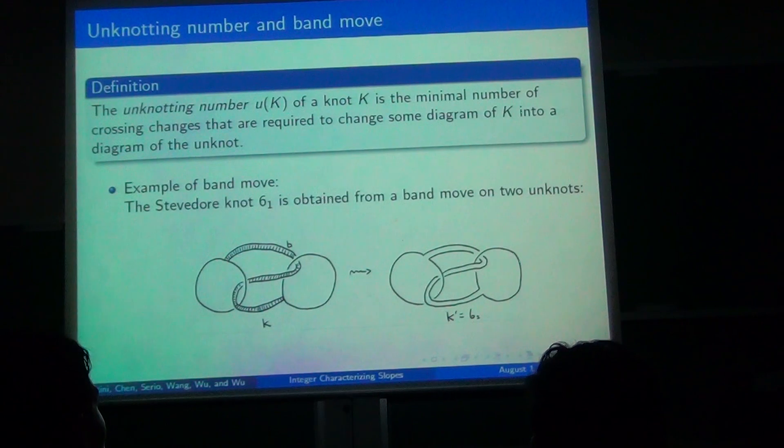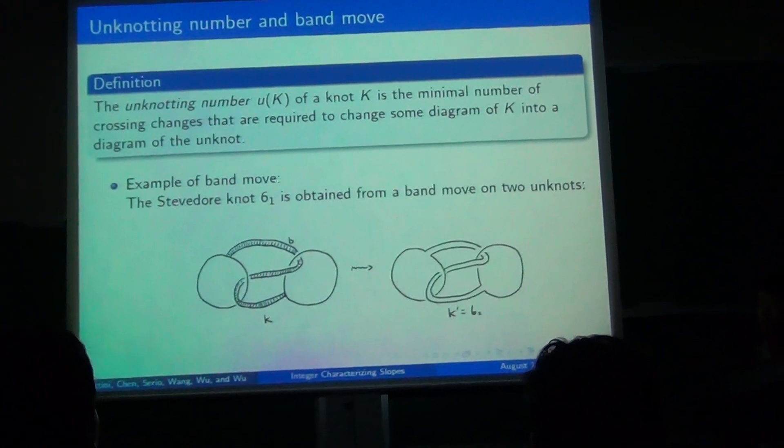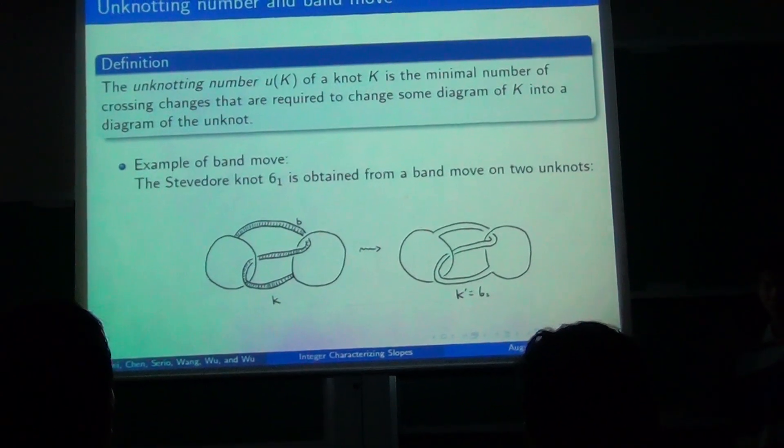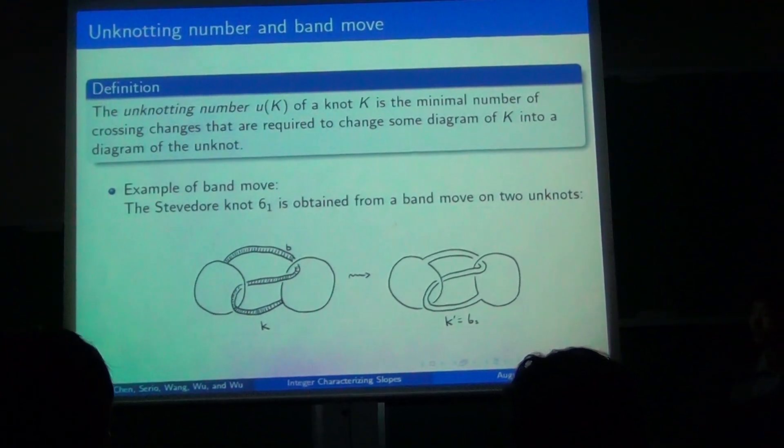Okay, I'll first introduce the unknot number. We can make K into an unknot by several crossing changes. So the unknot number is the minimum number of crossing changes that can make K into an unknot.